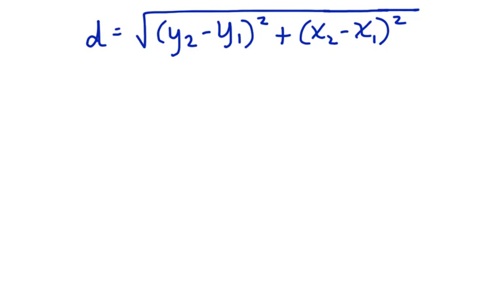Here's the distance formula once again. Now let's substitute the values from the ordered pairs. We had A was equal to negative 3, 4 and we had B was equal to 2, 1.